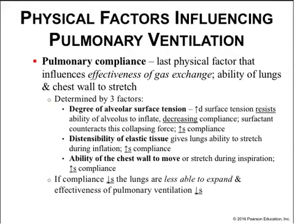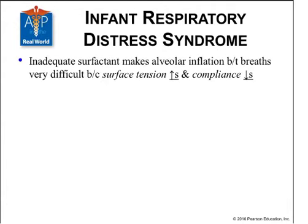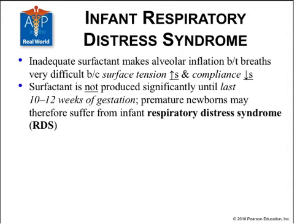A lot of restrictive disorders result in the scarring of the lungs, meaning the lungs can't open up the way that they would like. There are other factors that play into this as well. IRDS, as we've discussed previously, is the result of inadequate surfactant production by premature infant lungs from the type 2 pneumocytes.